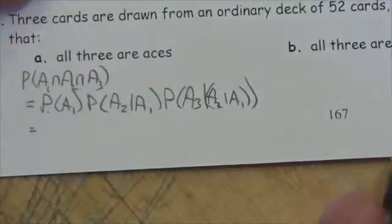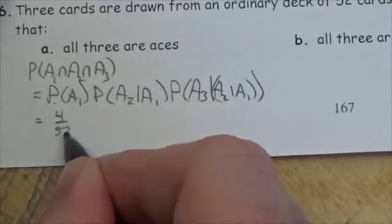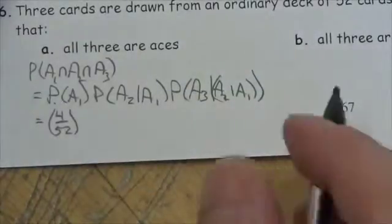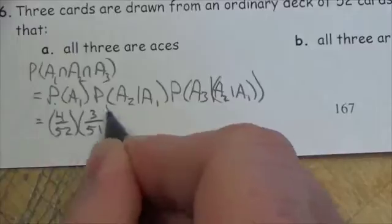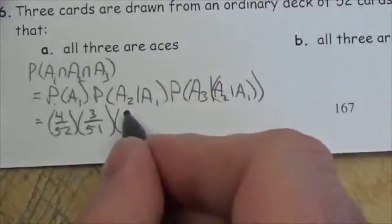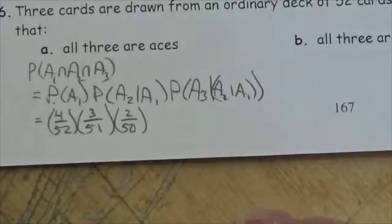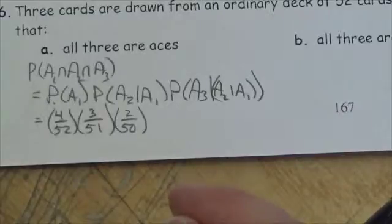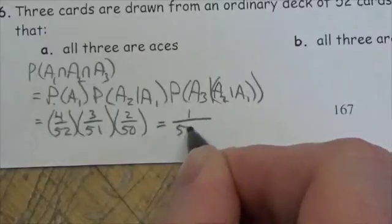What's the probability that the first card is an ace? Well, there are four out of 52 cards that are aces. If you're not putting that card back, there are three aces left and 51 cards left. For the third position, there are two aces left with 50 cards left. So this ends up being 4 × 3 × 2 divided by 52 × 51 × 50, which gives us a probability of 1 out of 5525.